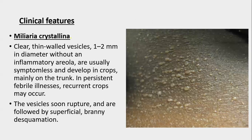Clinical features of miliaria crystallina: it is characterized by clear, thin-walled vesicles 1 to 2 mm in diameter without any inflammatory areola. They are usually symptomless, develop in crops mainly on the trunk. In persistent febrile illness, recurrent crops may occur. The condition is commonly seen in infants where the eccrine ducts are deficient. These vesicles soon rupture, followed by superficial branny desquamation.